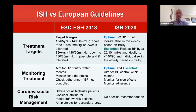Turning to treatment targets — an important area — both guidelines recommend lowering blood pressure below 140 over 90 as the initial objective, and then aiming to get blood pressure down to 130 over 80 or lower. In the European guideline, they recommend considering going lower than 130 over 80 in younger patients who will tolerate a lower blood pressure, and down to 130 over 80 in older patients if they tolerate that level of pressure.